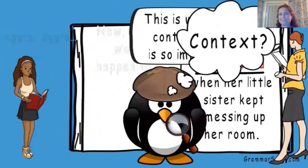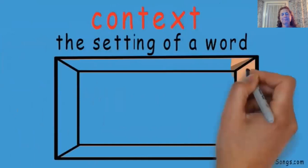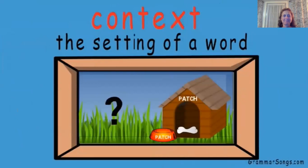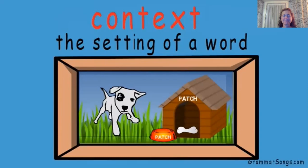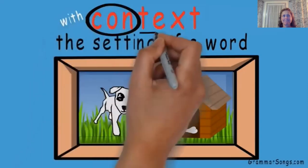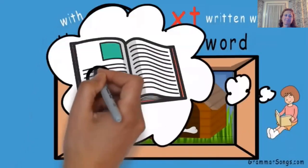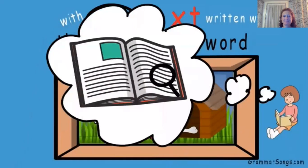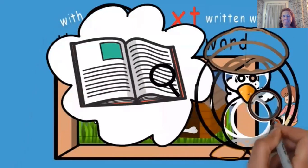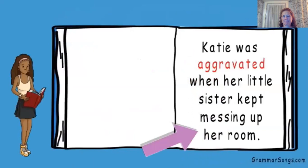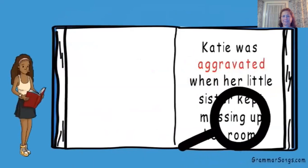Context is like the setting of a word. You can probably guess what is missing from a picture based on the setting or context around the missing object. Using context clues is similar. Con is a prefix meaning with. Text means written words. As a reader, you are looking for clues within the written words to help you understand unfamiliar words or phrases. A word's context includes the words and sentences around it — this is where you can find clues to the meanings of a word that you don't know.